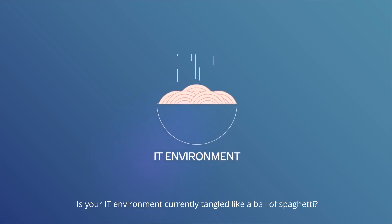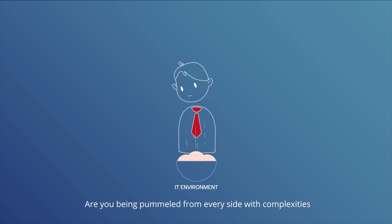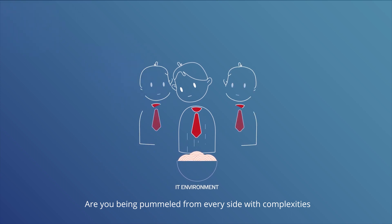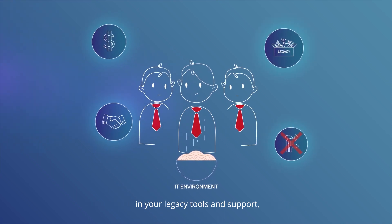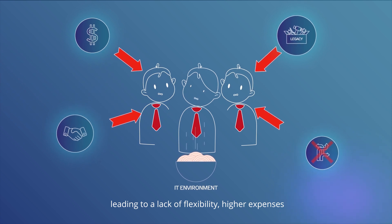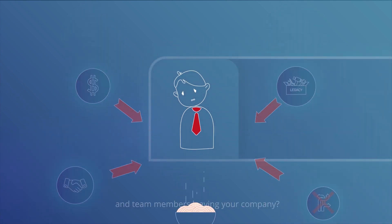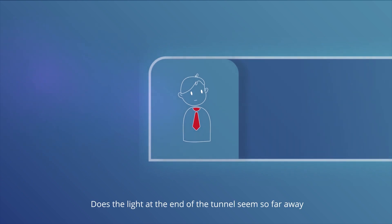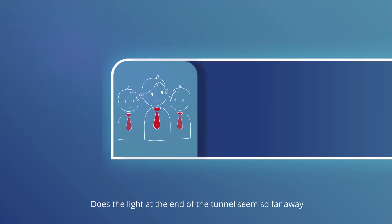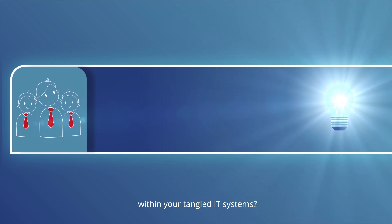Is your IT environment currently tangled like a ball of spaghetti? Are you being pummeled from every side with complexities in your legacy tools and support, leading you to a lack of flexibility, higher expenses, and team members leaving your company? Does the light at the end of the tunnel seem so far away when finding the root cause of a system failure within your tangled IT systems?